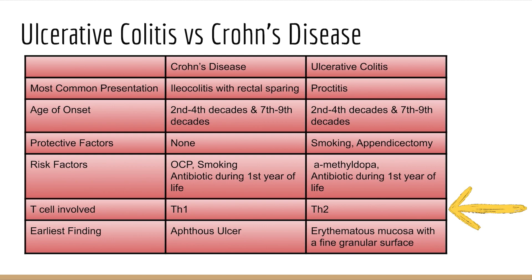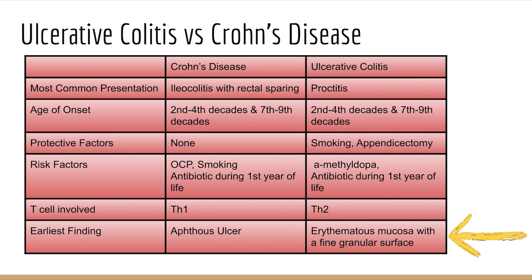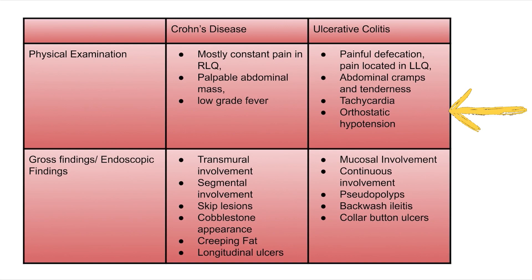T-cell involvement is a potential exam question: in Crohn's disease it is Th1, in ulcerative colitis it is Th2. The earliest finding in Crohn's disease is an aphthous ulcer, whereas in ulcerative colitis it is edematous mucosa with a fine granular surface.